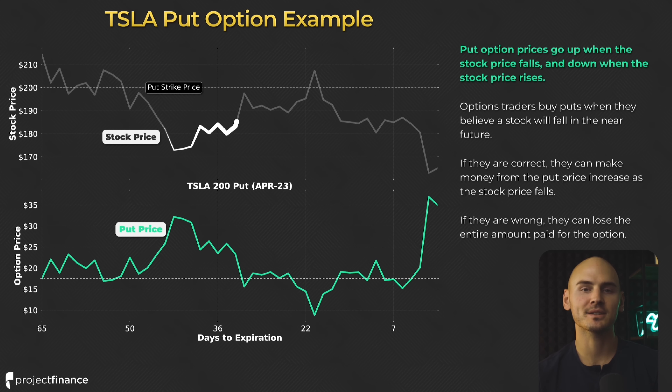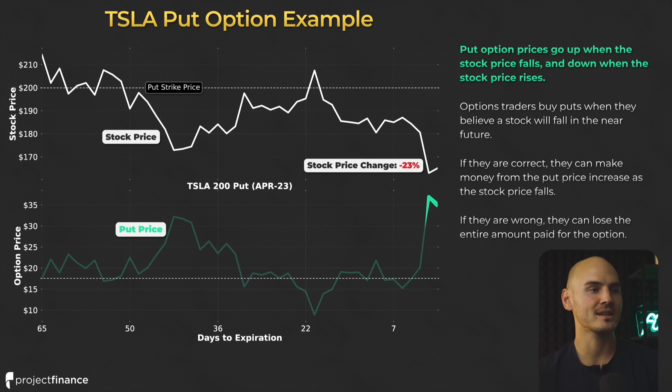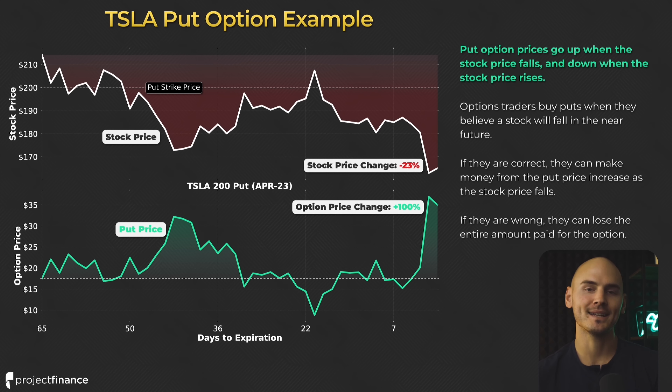In this period, we can see that Tesla's stock price fell by 23%, and this particular Tesla put option increased by 100%. This is a really cool opportunity to use put options — when the market is falling, you can utilize put options to profit from the decline in stock prices. With that being said, if you own a large portfolio of stocks, you can use put options to protect against losses. So there are ways to use options not just to speculate, but to reduce the risk you are exposed to.